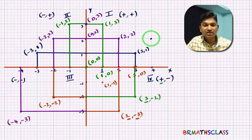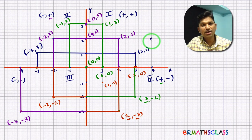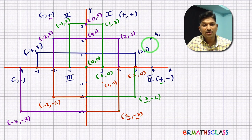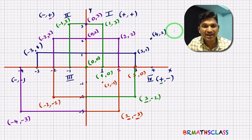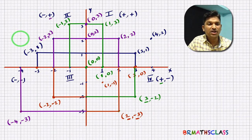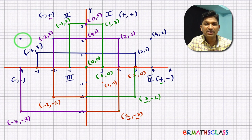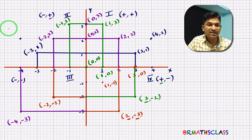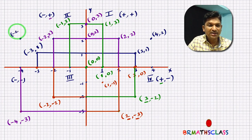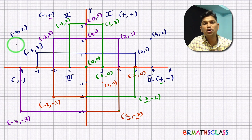If you want to plot a point, first look at the x-axis value, then the y-axis value. For example, to plot (4, 2): the x-axis shows 4 — this length is 4 units — and the y-axis shows 2 — this length is 2 units. You can mark it directly. For the point (−4, 2): on the x-axis, −4 is there; on the y-axis, 2 is there. This point is (−4, 2).